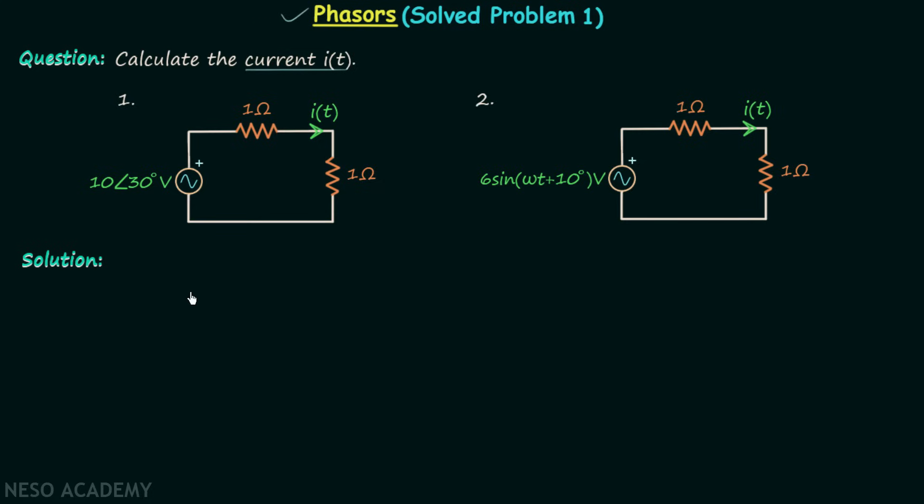We will begin with circuit number 1, in which there are two resistors connected in series and both the resistors have 1 ohm resistance value. The voltage given is in phasor representation - the parent voltage is Vt. This is in sinusoidal representation, time-dependent voltage. In the question, the phasor of this voltage is given as 10 angle 30 degrees.